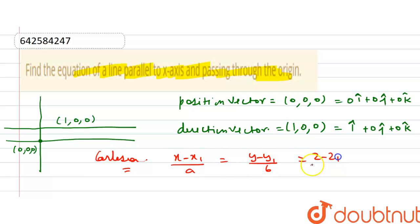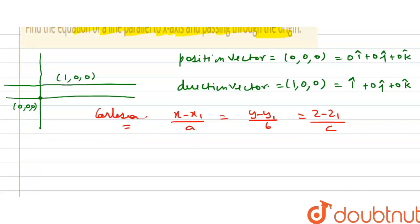Now the Cartesian form is: (x - x₁)/a = (y - y₁)/b = (z - z₁)/c. Here x₁, y₁, z₁ are the position vector and a, b, c are the direction vector.